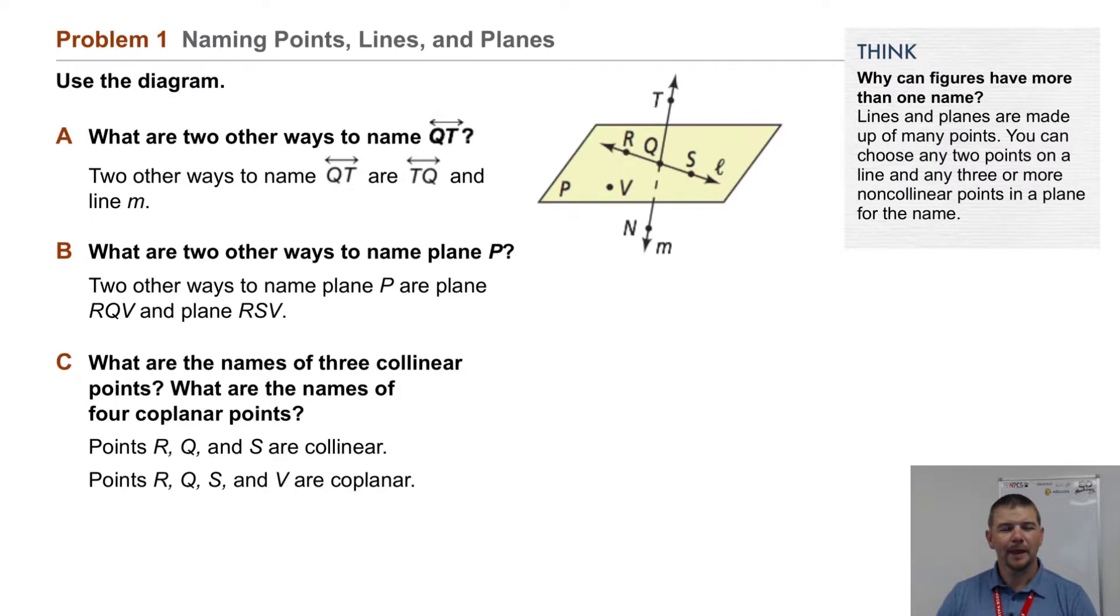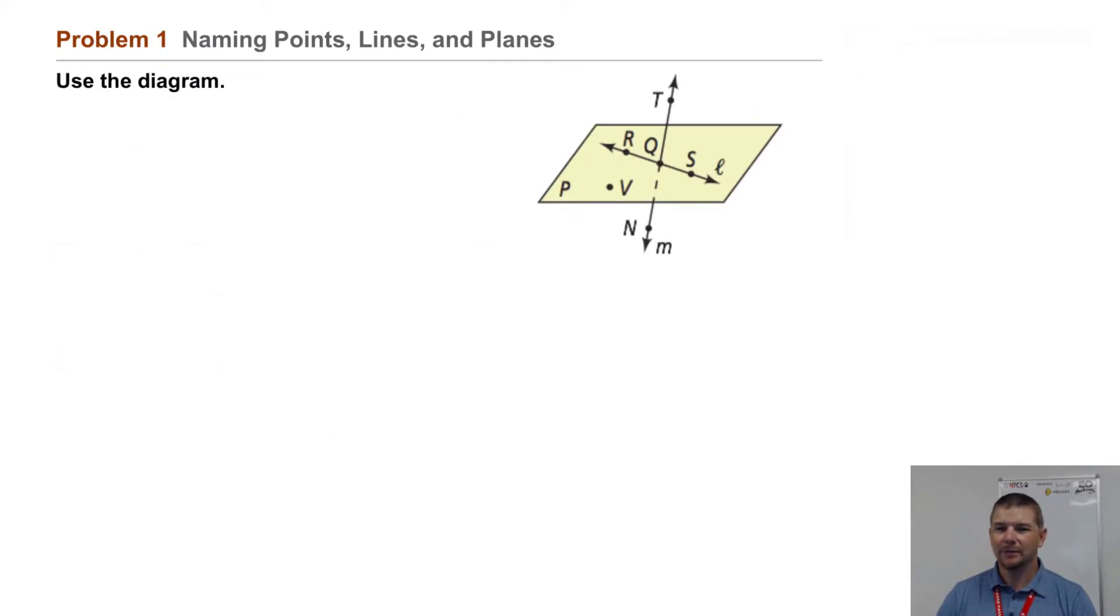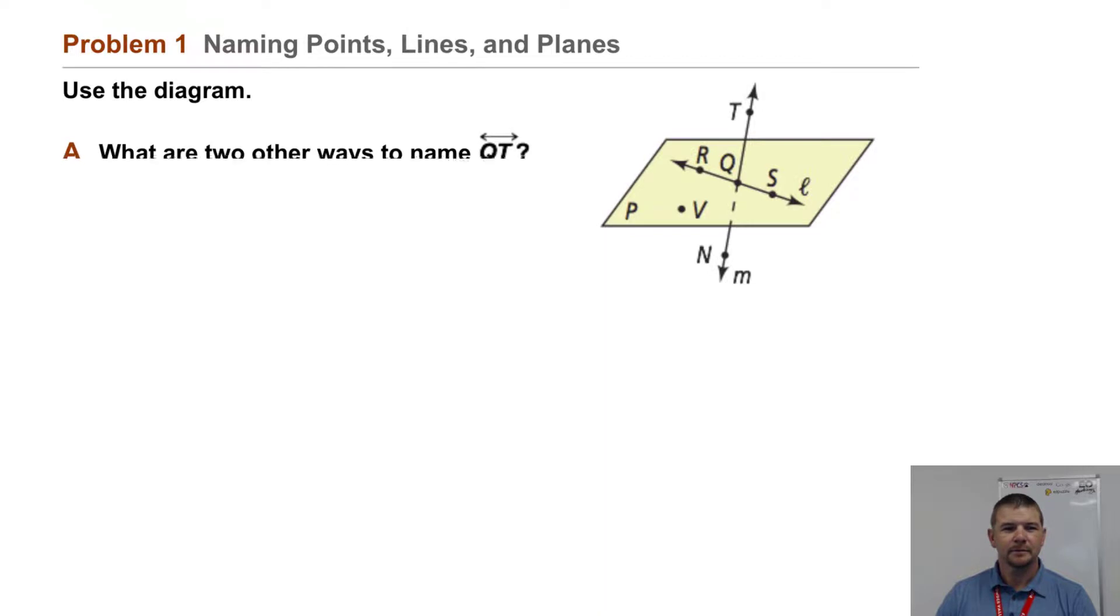Problem one: naming points, lines, and planes. Use the diagram. What are two other ways to name line QT? Well, two other ways to name line QT are line TQ and also line M. Note the lowercase script letter M.